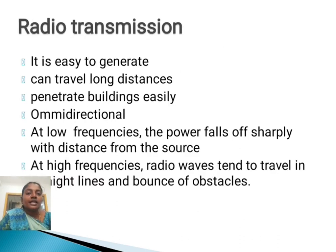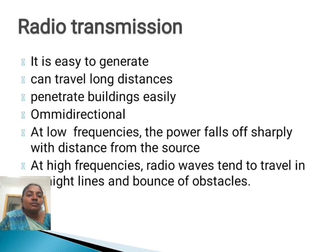The second one is radio transmission. It is easy to generate, can travel long distances, penetrate buildings easily, and is omnidirectional. At low frequencies, the power falls sharply with distance from the source. At high frequencies, radio waves tend to travel in straight lines and bounce off obstacles.